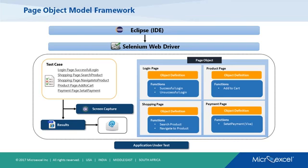I've taken the example of an e-commerce website: you have a login page, shopping page, product page, and payment page. Each page has object definitions for all elements and the functions that can be performed. Say the product page has an 'add to cart' function, and the shopping page has a 'search product' function. In your test case, you just reference the page class and call the function — LoginPage.loginFunction(). Once the page object classes are ready, it's very easy to create test cases and enhance the framework to capture screens, generate HTML reports, or email test results.